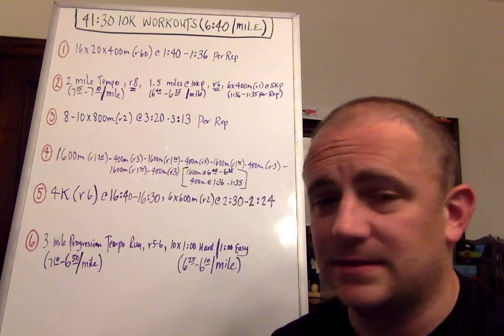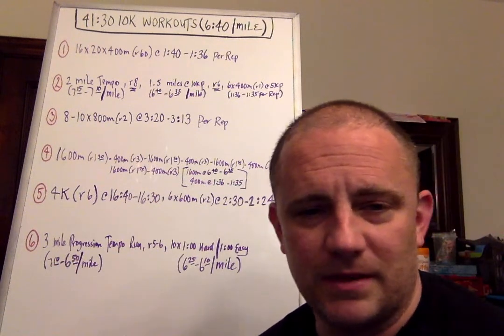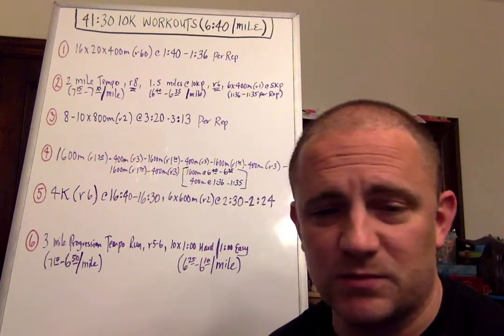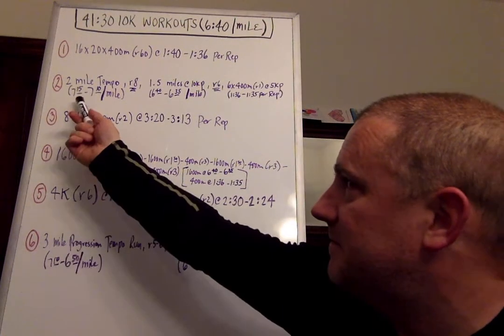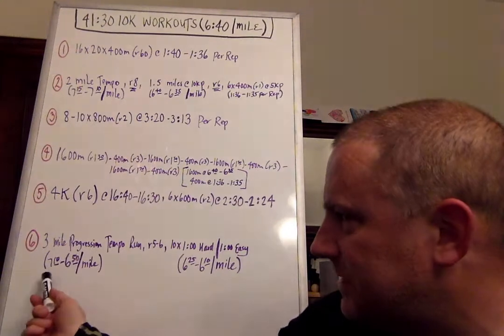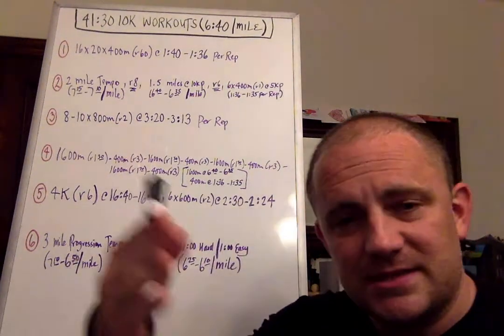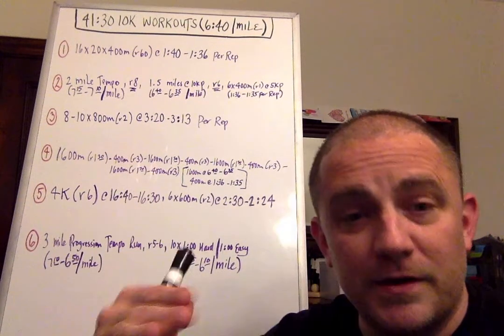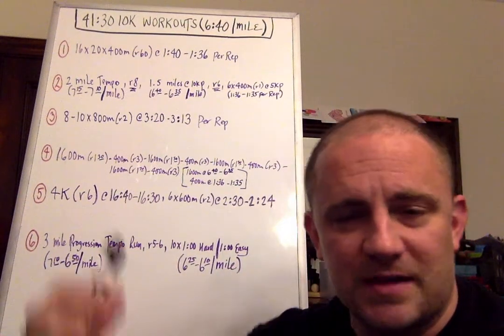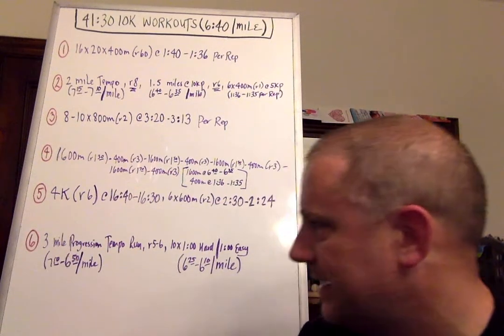And then workout six is a three-mile progression tempo run. I like incorporating tempos and fartleks when we can. This is a three-mile progression, so it's not 7:15 to 7:10 now. This starts at 7:10, and it goes down to 6:50. So let's say it's three miles. You go 7:10, 7 minutes, 6:50. You drop 10 seconds per mile. This is a little bit more of an aggressive tempo run, but it's shorter. It's not a four- or five- or six-mile tempo run. It's approaching race pace.